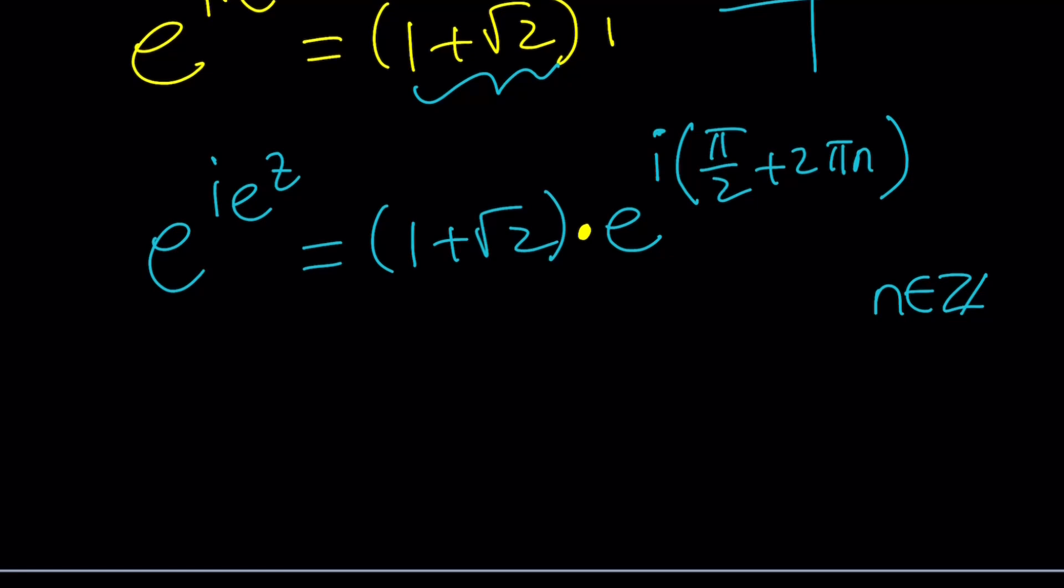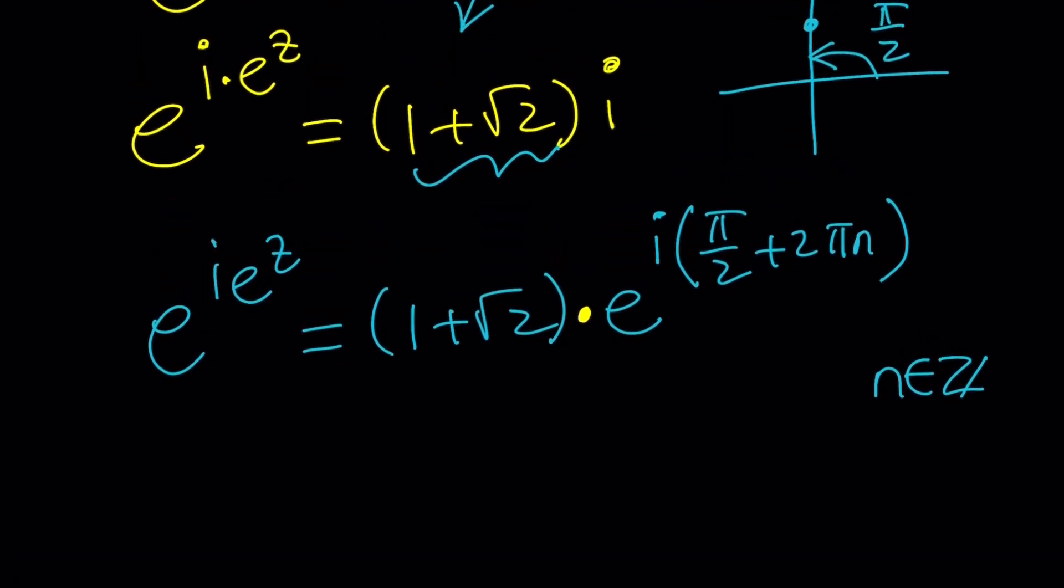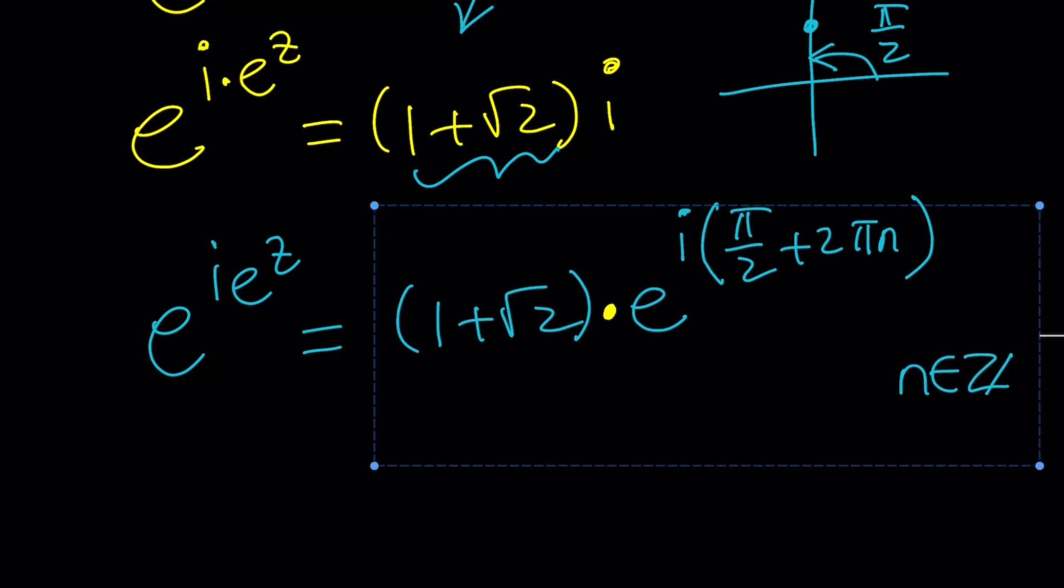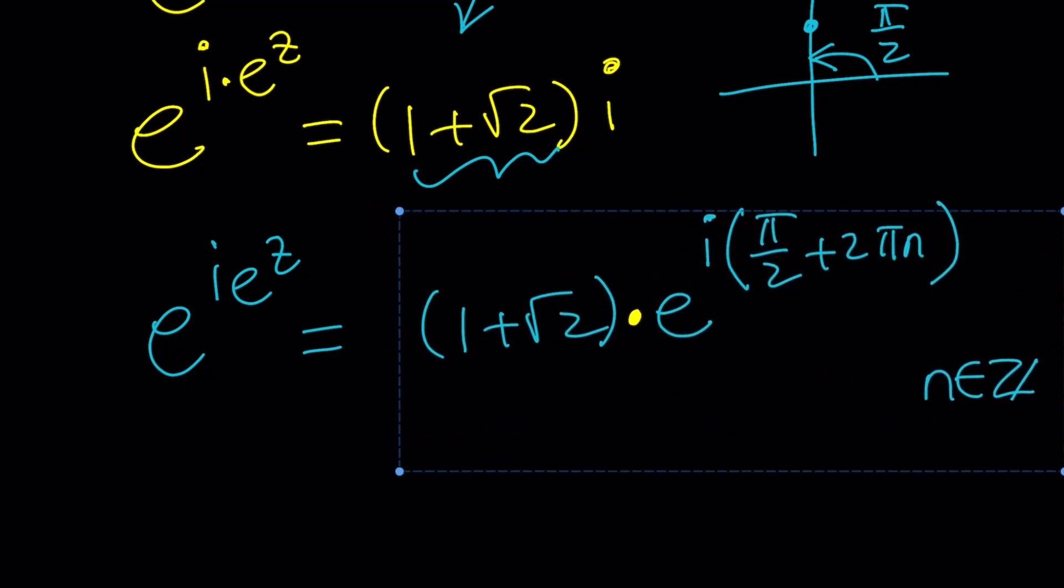And now we can go and natural log both sides, bring everything down. Let's move this stuff a little bit. Oops. I did need another tool, apparently. Can we move the whole thing? Yeah, I guess. Like this, maybe. This much? Okay, that's good. And now let's go ahead and natural log both sides. With the ln, a huge ln.